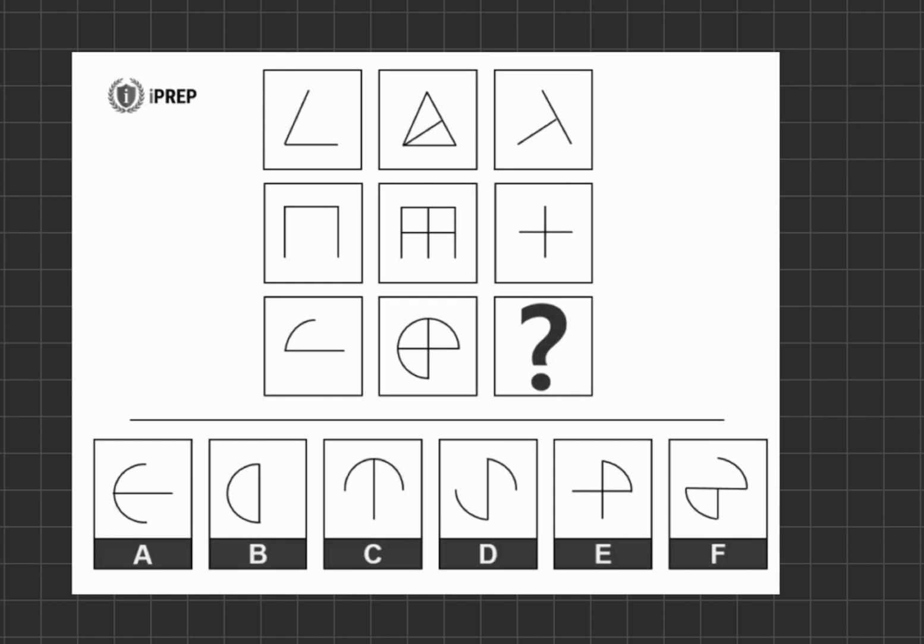Let's take a look at our shapes. We can tell that our pattern is going to be found through our rows. If we take a look at the first row, our middle figure is going to be the final figure and the two side figures are going to be the ones that make up our final one.